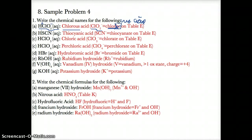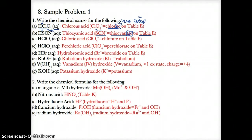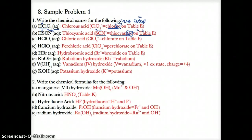For HSCN, breaking it apart: H+ in front followed by a negative SCN- ion in the back. SCN- is thiocyanate on table E. Since the ending is -ATE, get rid of the -ATE and replace it with -IC acid — an acid with three or more elements with a polyatomic ion ending in -ATE is replaced with -IC acid. So HSCN is named thiocyanic acid.